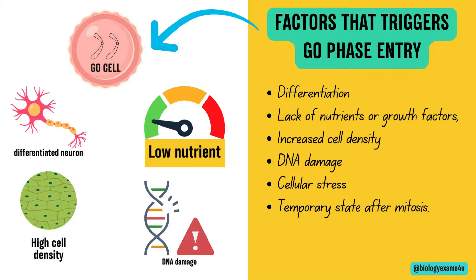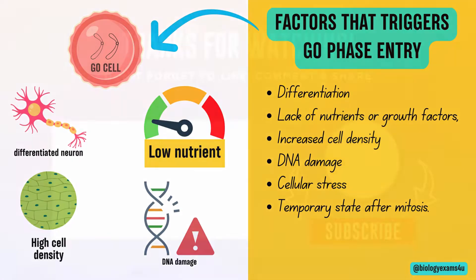Some cells may also enter G0 temporarily after mitosis. The significance of this G0 phase is that it allows cells to conserve resources and maintain a balance or homeostasis until conditions are favorable for re-entering the cell cycle.